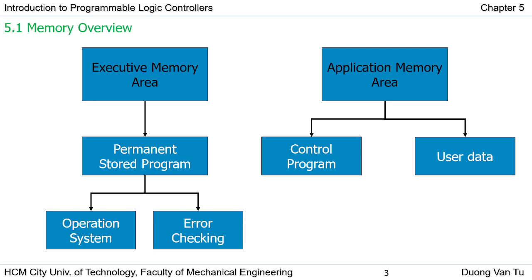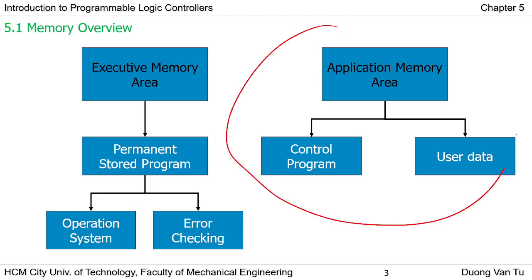When you use the PLC, you cannot access or see this permanent storage RAM. It is used to implement hardware checking and error checking on the PLC. You cannot see this executive memory area or the permanent storage RAM in the PLC.